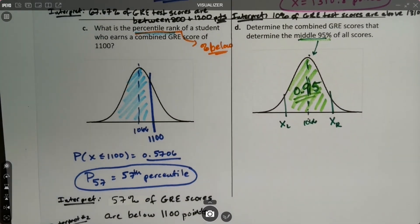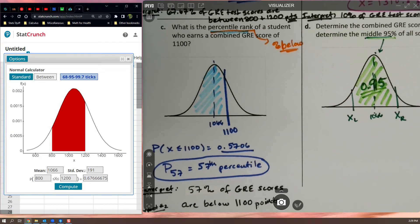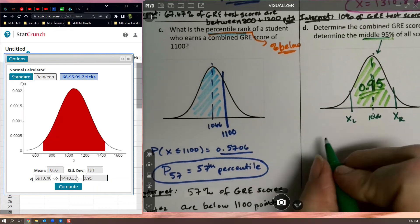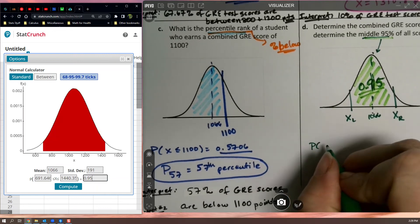Well, I'm just going to have to use the between function. So let me click between. And I'm going to tell it over here. My area is 0.95. Enter. And there we have it.